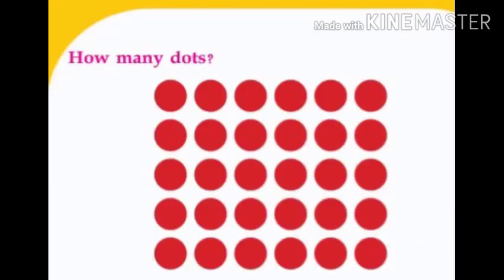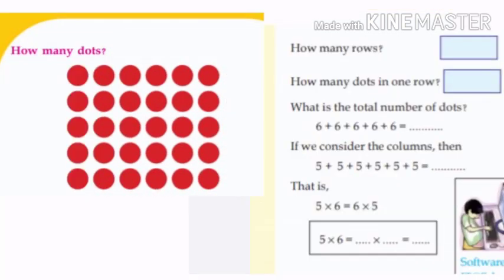Next activity: how many dots? Ok, look — how many rows are there? Yes, five rows. How many dots in one row? How many dots are there? Yes, six dots. Then, what is the total number of dots?